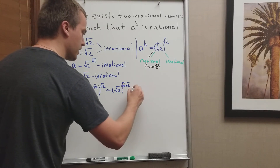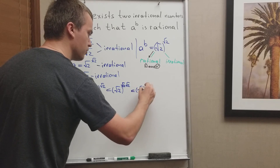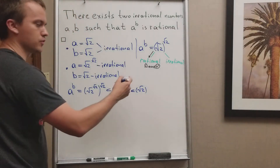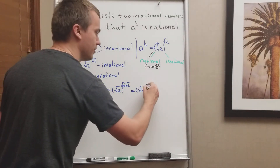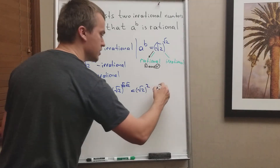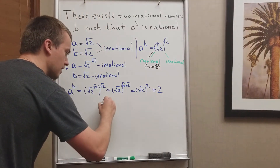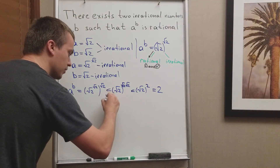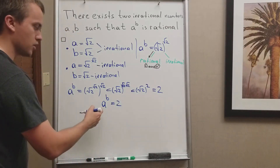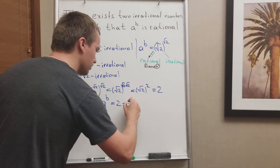This equals square root of 2 to the power of square root of 2 times square root of 2, which is square root of 2 squared, and square root of 2 squared is just equal to 2. So what I get is that a to the power of b is equal to 2, and a to the power of b is rational.